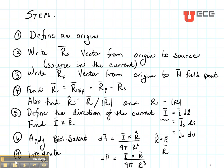We then write RS, which is a vector from the origin to the source. In this case, our source is the current. We then write RP, which is a vector from the origin to the location where we want to find the magnetic field point.